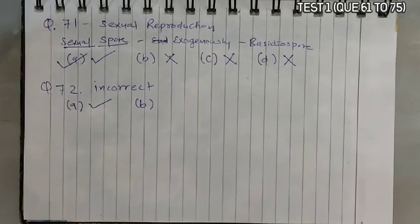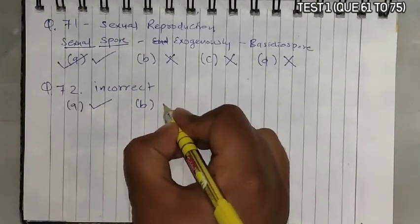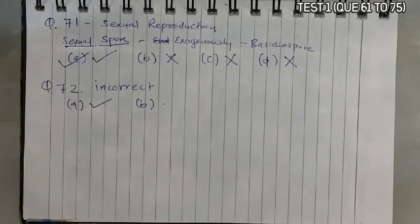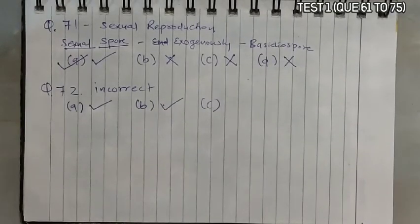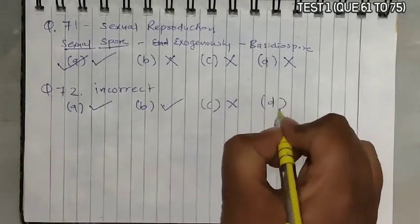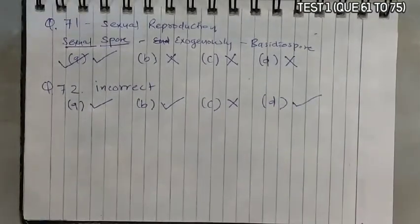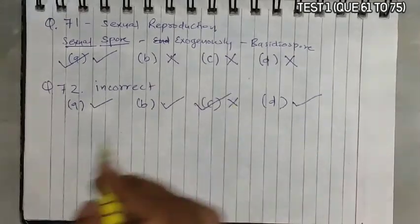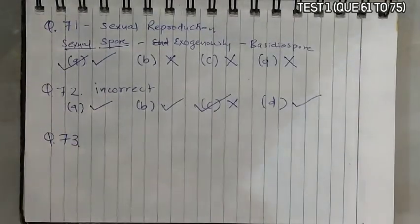Statement C says 'morels and truffles are poisonous mushrooms' — this is incorrect because morels and truffles are actually edible mushrooms, not poisonous. Statement D: 'Yeast is unicellular and useful for fermentation' — correct, yeast carries out fermentation. We need to select the incorrect statement, so option C becomes the answer.